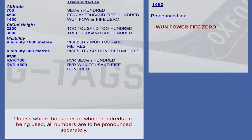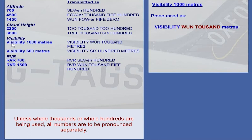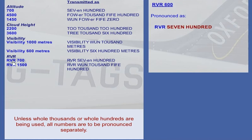1-4-5-0. Two-3-2-hundred. Three thousand. Six hundred. Visibility one thousand meters. Visibility six hundred meters. RVR seven hundred. RVR one thousand. Fife hundred.